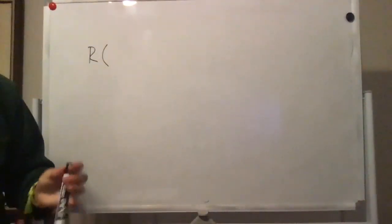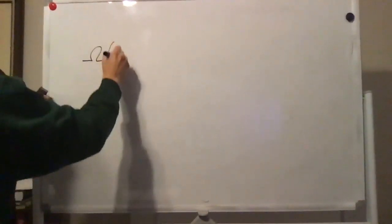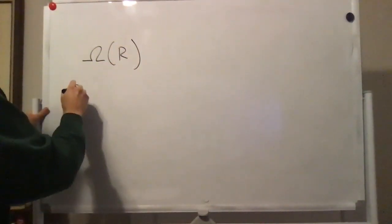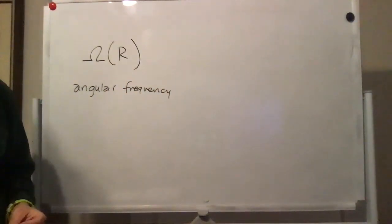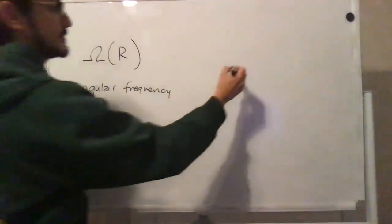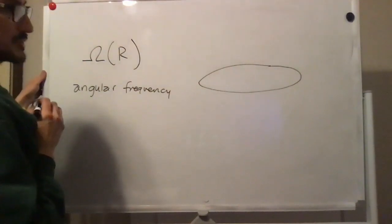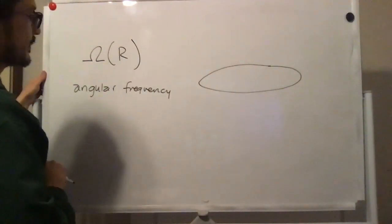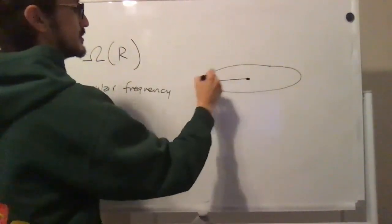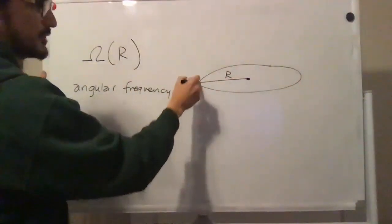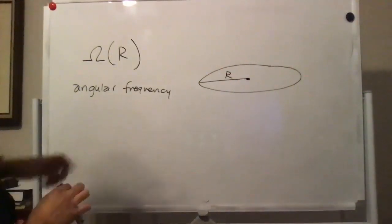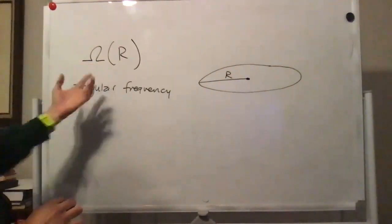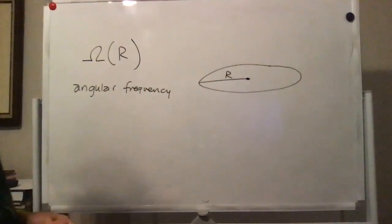Let ω(r) be the angular frequency for a body in the disk with cylindrical symmetry. This is a continuum — there is nothing special about any particular r. In general, you will have a different angular frequency at different radii.